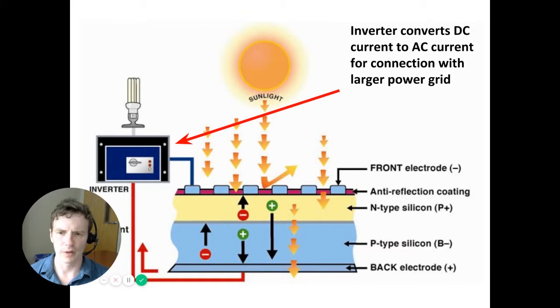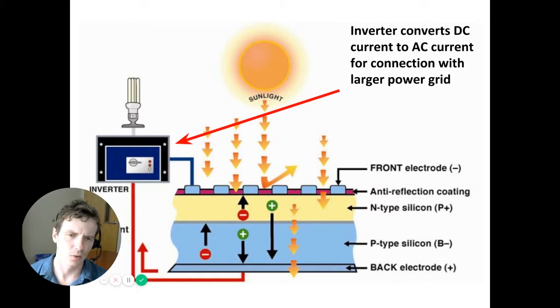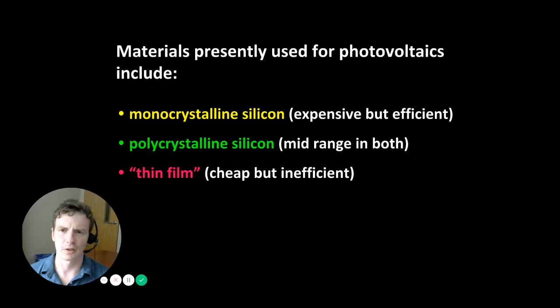The electrical current generated by PV is direct current, but the rest of our electrical grid is alternating current. So in order to integrate photovoltaic solar into the larger grid, it must first be converted from DC to AC using devices called inverters. Materials used for photovoltaics include monocrystalline silicon, polycrystalline silicon, and thin film, among others.